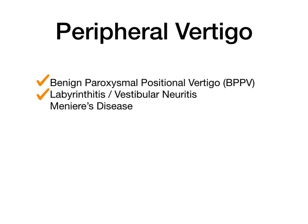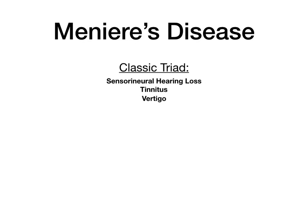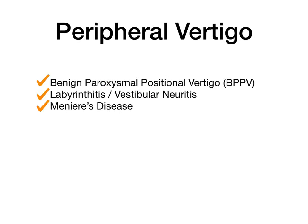The last type of peripheral vertigo to discuss is Meniere's disease. Meniere's disease is a classic triad of sensorineural hearing loss, tinnitus, and vertigo — you must memorize these three things. If you see these three symptoms in a vignette, the answer is Meniere's disease. My mnemonic: men get STVs — S for sensorineural hearing loss, T for tinnitus, V for vertigo, and 'men' for Meniere's disease.